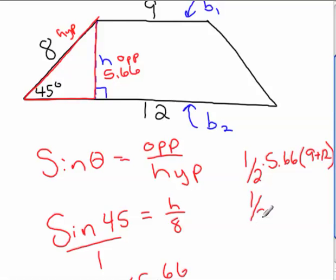1 half, you just use 0.5? Yeah, sure. Use 0.5 instead of 1 half. Yep. And 9 and 12 is 21. So 0.5 times 5.66 times 21 is 59.43, approximately. That's the area of a trapezoid.